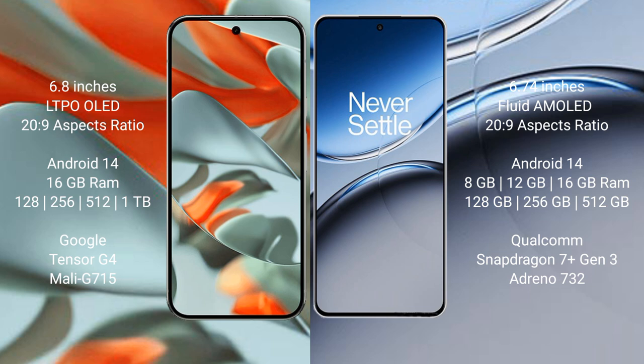Google Pixel 9 Pro XL comes with 12GB or 16GB RAM and 128GB to 256GB internal storage. It is powered by the Google Tensor G4 processor with Adreno GPU.